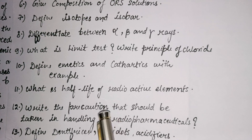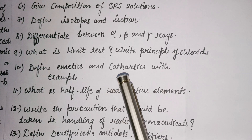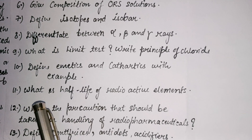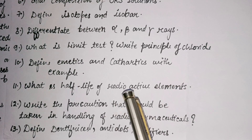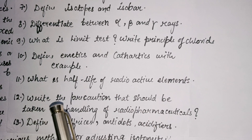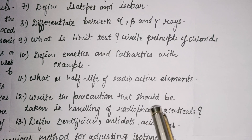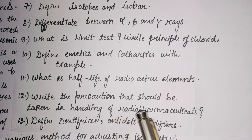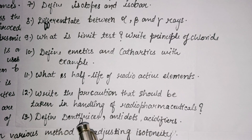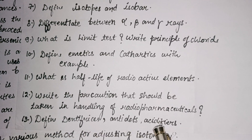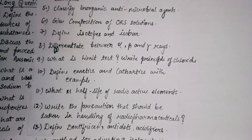The tenth question: define emetics and cathartics with examples — write what emetics are and what examples of cathartics exist. The eleventh question: what is the half-life of radioactive elements? The twelfth question: write the precautions that should be taken in the handling of radiopharmaceuticals — which precautions are used during radiopharmaceutical handling. The thirteenth question: define dentifrices, antidotes, and acidifiers — define what acidifiers and antidotes are.